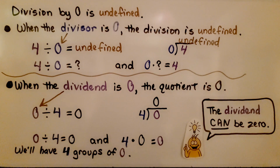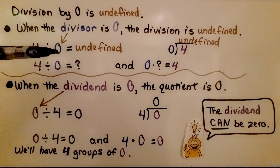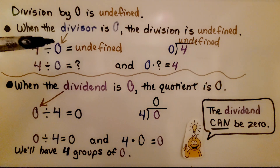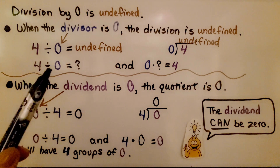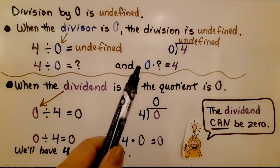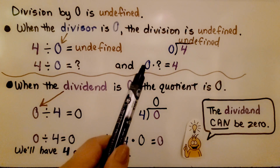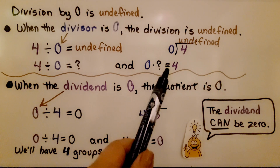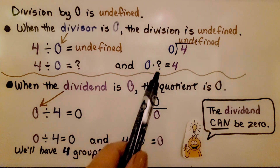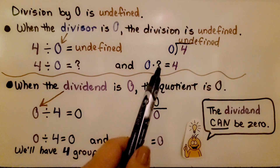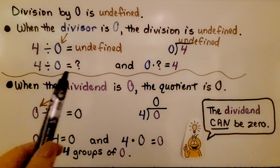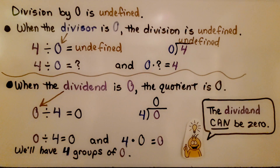Division by zero is undefined. When the divisor is zero, the division is undefined. We can't have four divided by zero because when we write a related multiplication sentence, we get zero times some number equals four, and there is no number we can multiply by zero to equal four. It doesn't make sense — it's undefined.